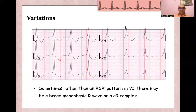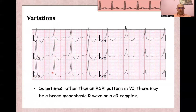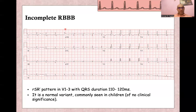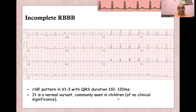There is a lot of variation. Sometimes instead of RSR', you will find only a wide monophasic R wave in V1, or even QR in V1, V2, and V3 — this is a normal variation of right bundle branch block. Like complete left bundle branch block, there is also incomplete right bundle branch block: same RSR' morphology and deep slurred S wave in V6, but the complex is between 110 and 120 milliseconds. This can be a normal variant and can be seen normally in children, and is often clinically insignificant.